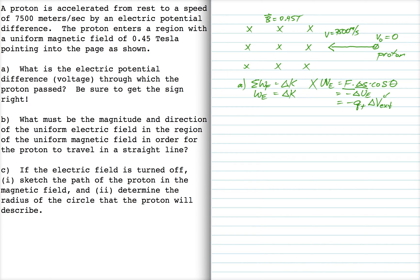So I set minus Q delta V, that's the proton's charge, and then that external voltage, I'm going to set that equal to the change in kinetic energy. And of course the initial kinetic energy is zero because V naught is zero. So this is minus 1.6 times 10 to the minus 19 Coulombs for the charge, and then that delta V that we're looking for, and then the mass of the proton is 1.67 times 10 to the minus 27 times 7500 squared. When I solve for delta V, I get minus 0.29 volts.